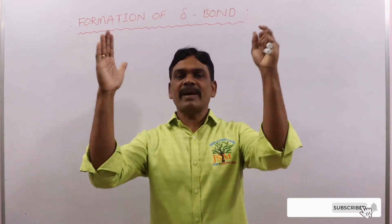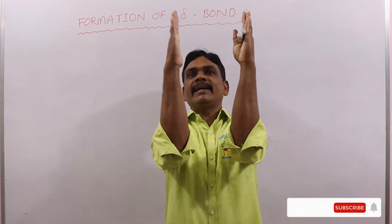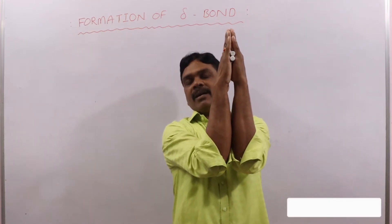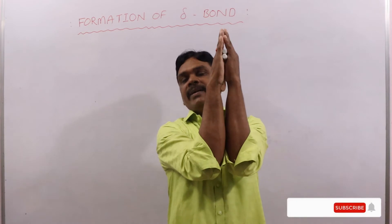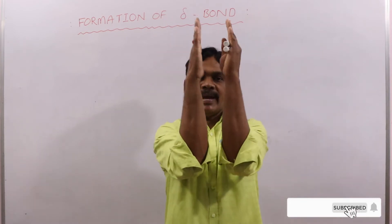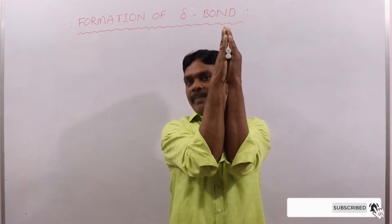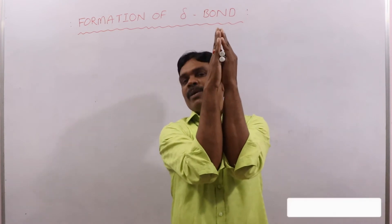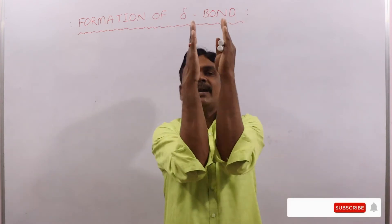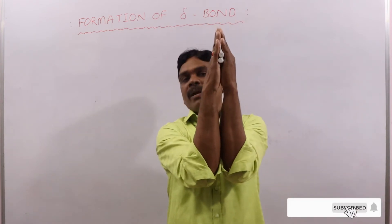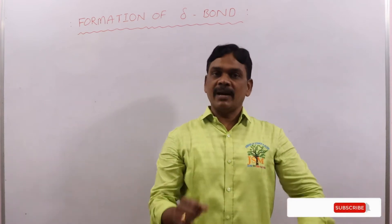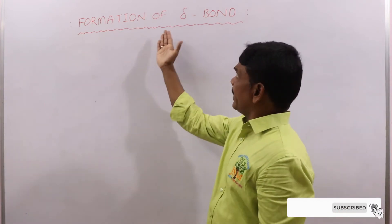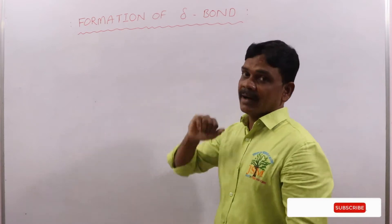So now in case of pi bond, it is lateral overlapping or parallel overlapping or sideways overlapping. The formation of pi bond takes place due to parallel overlapping of atomic orbitals.